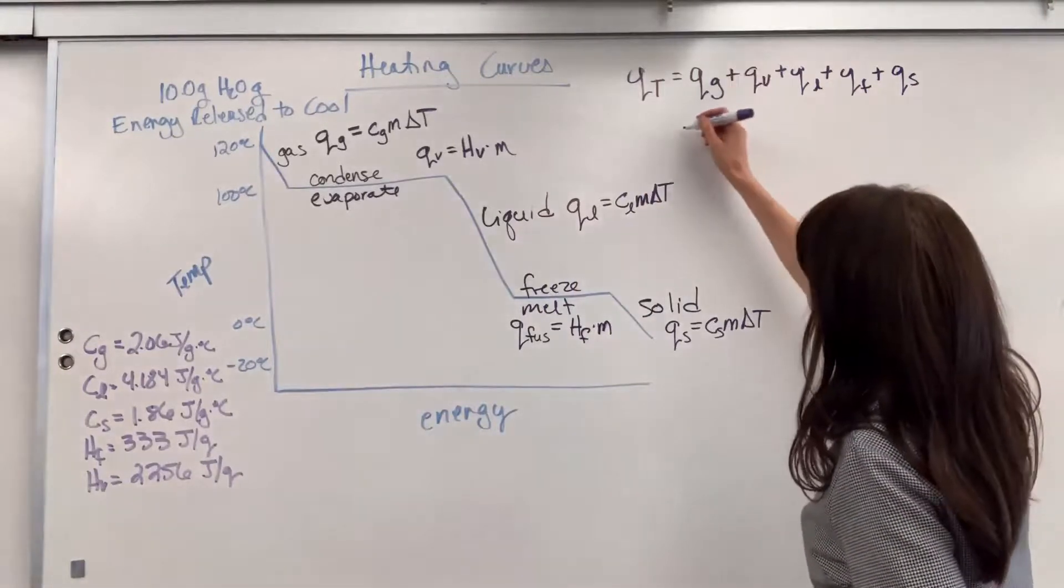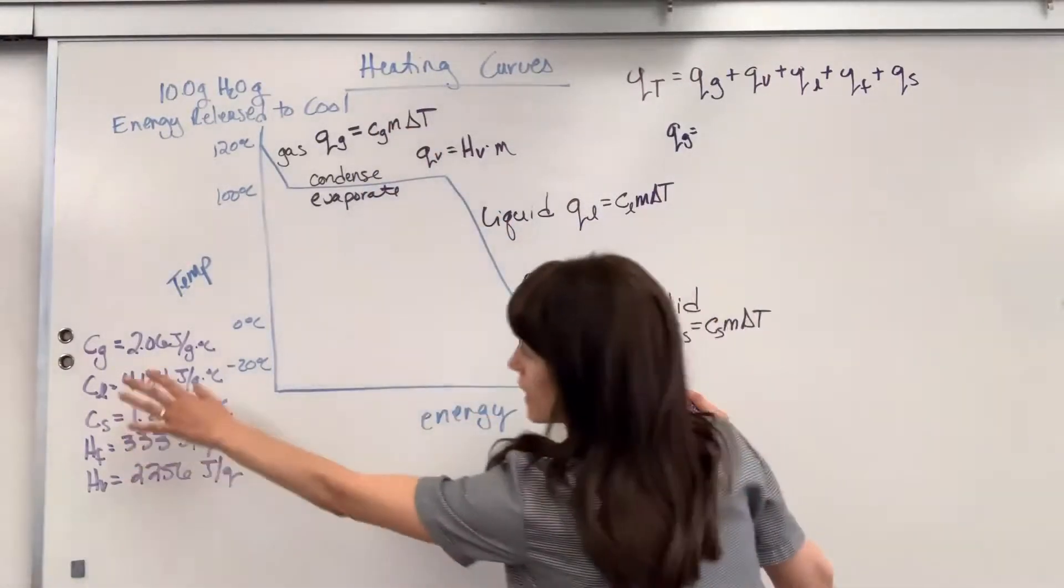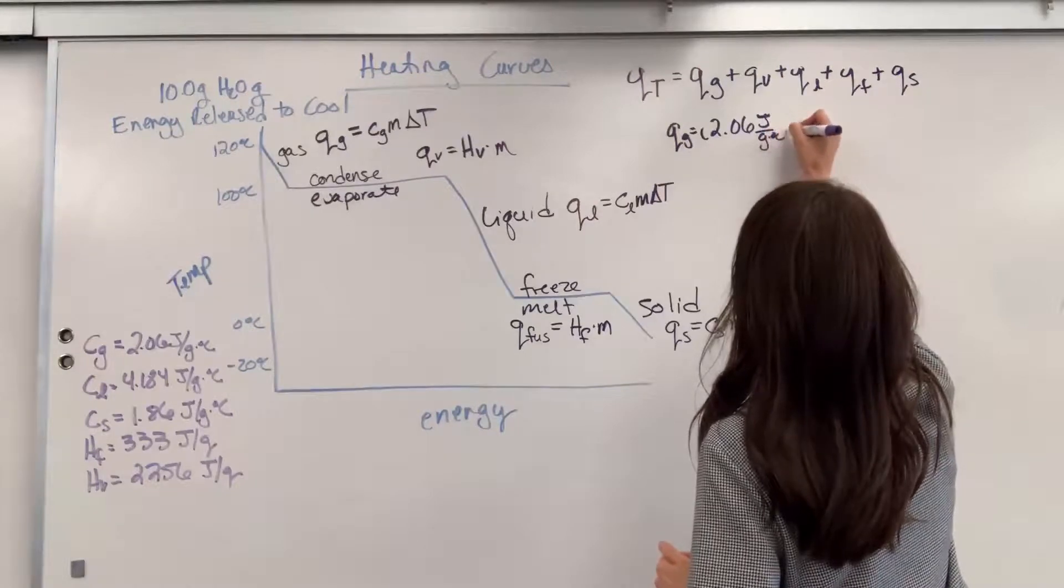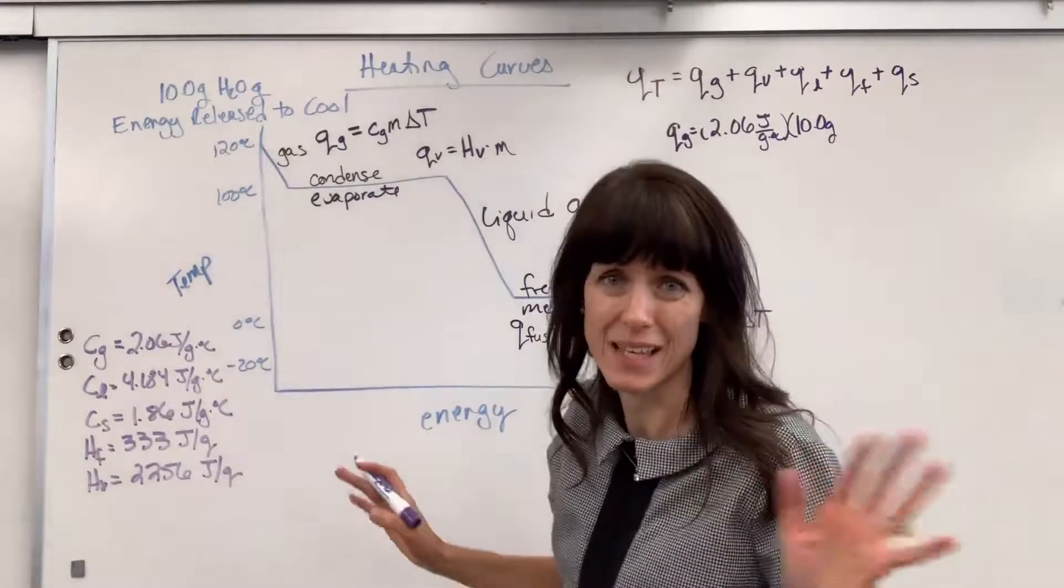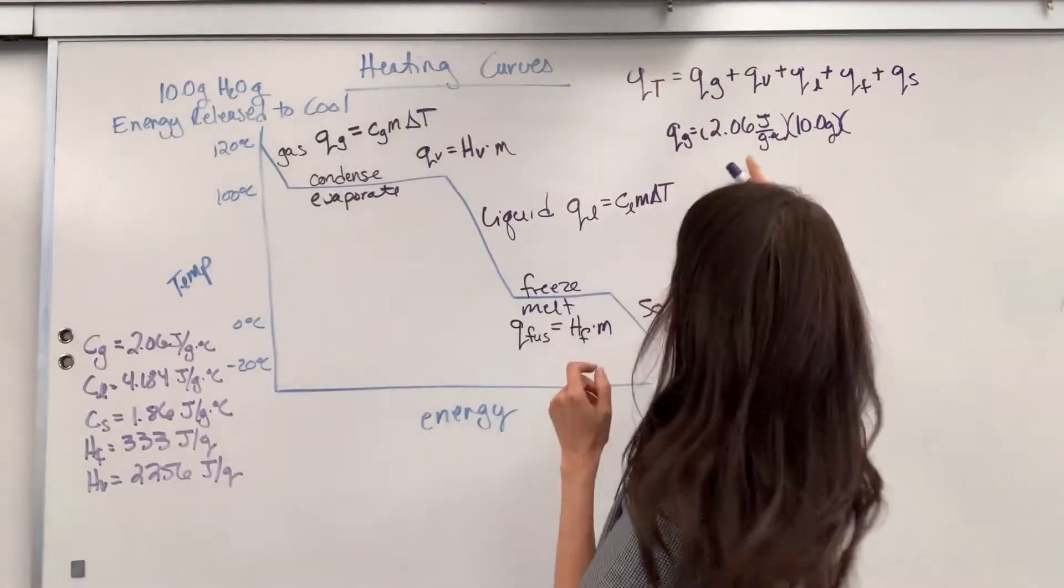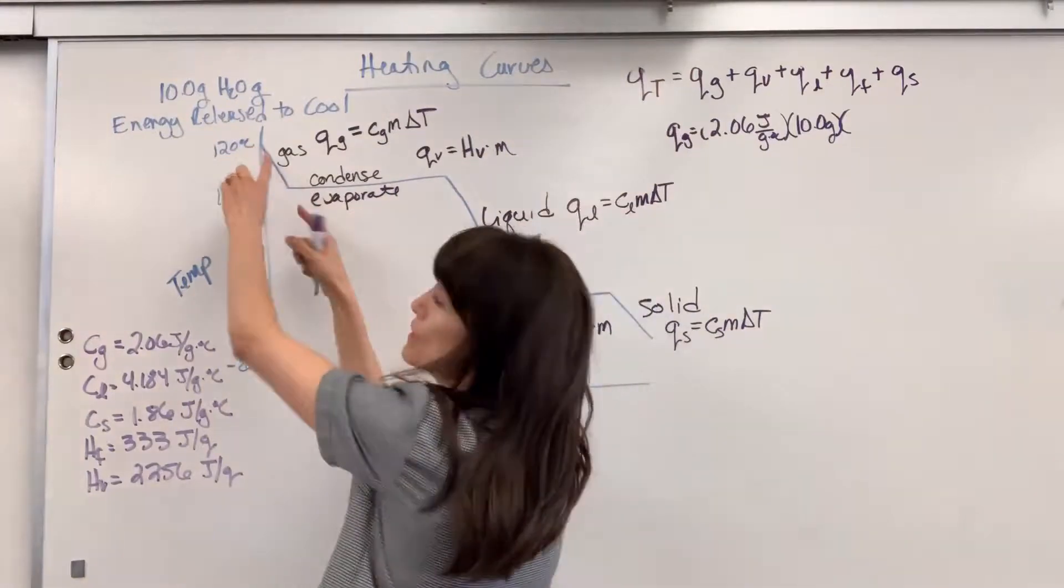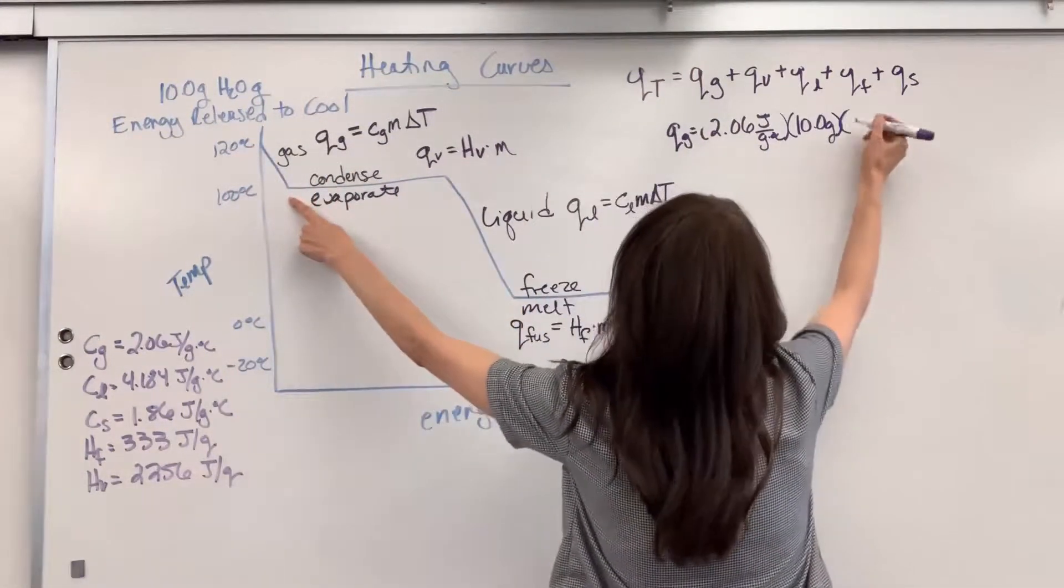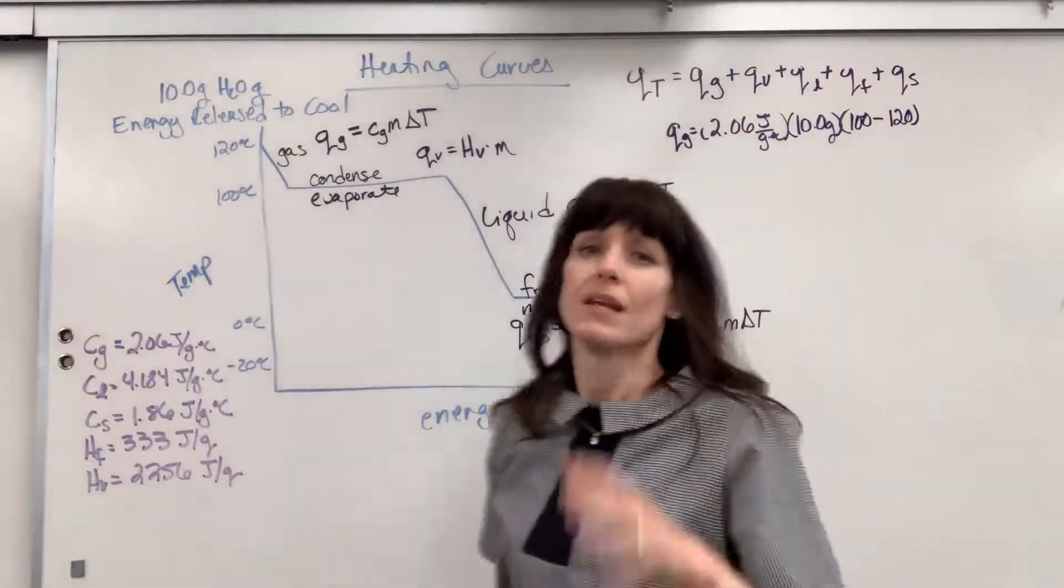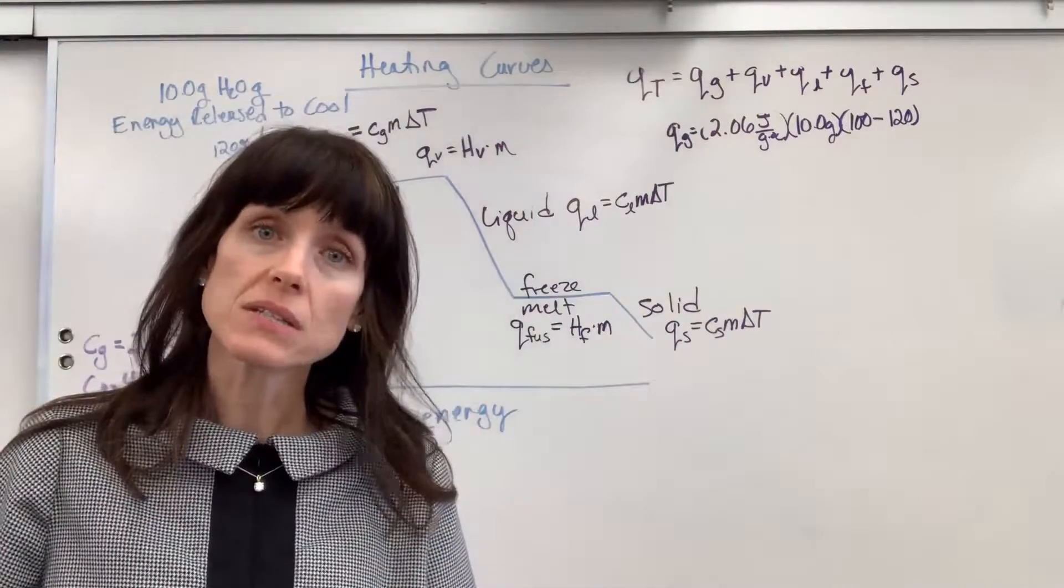So let's start with the gas. Q of the gas is specific heat of gas times mass times delta T. Specific heat of gas, I look it up on my table, it is 2.06 joules divided by gram times degrees C times the mass, 10 grams, and that's going to stay the same the whole time. Change of temperature, be so careful on this. Because that specific heat, that C sub g only applies to the gas, the change in temperature is only for the gas phase. So, the final temperature is 100 and the initial temperature was 120.